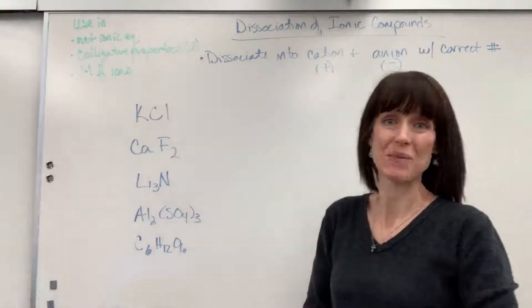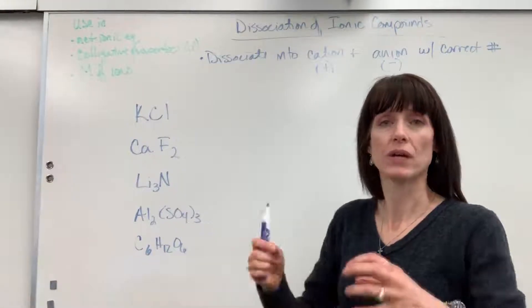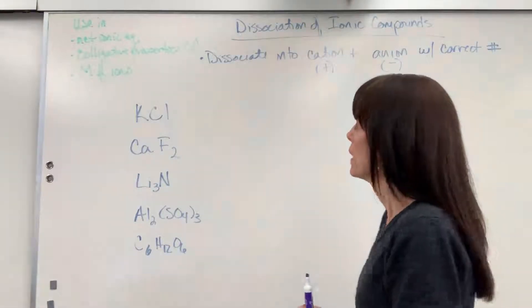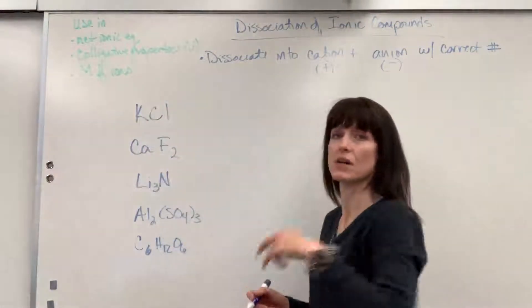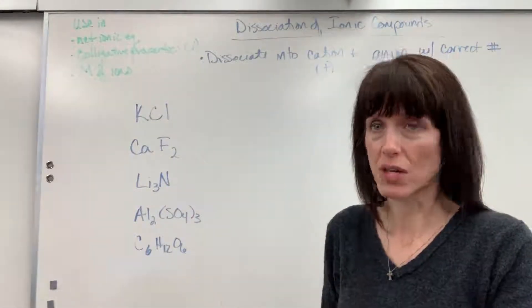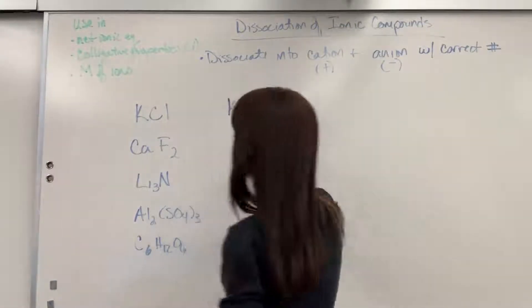So I have a list of some examples here. We're going to take potassium chloride and we're going to dissociate this, break it into the cation and the anion. So as a cation, remember the first element is always going to be the metal and that is the cation, the positive charge. So this potassium, K, is a plus one.